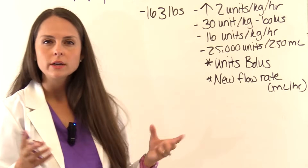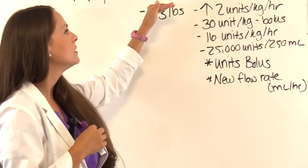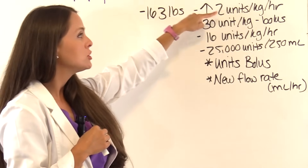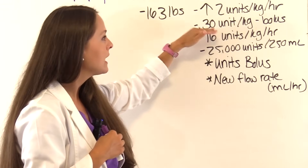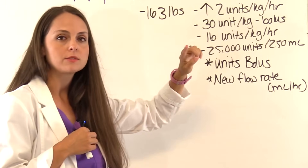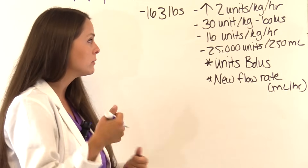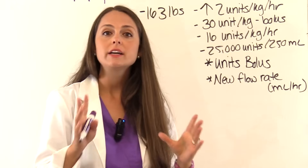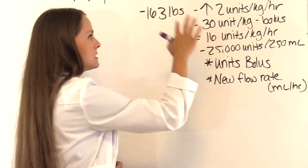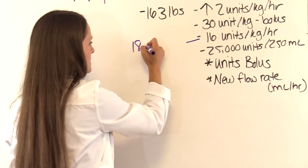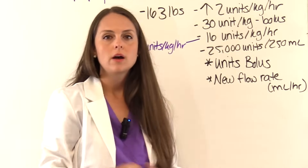Looking at the important information: protocol tells us to increase the drip by 2 units per kilogram per hour, and the patient will also get a 30 units per kilogram bolus. The current pump is running at 16 units per kilogram per hour, and we need to increase that by 2 units, so 16 + 2 = 18. The new dosage needed is 18 units per kilogram per hour. On hand we have a heparin bag: 25,000 units per 250 mls, and the patient weighs 163 pounds.